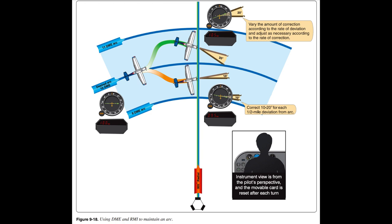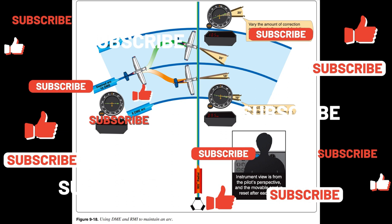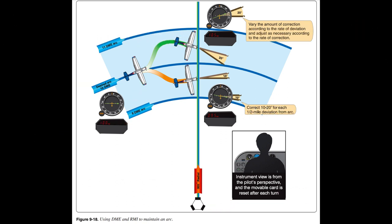To maintain the arc using an RMI: 1. With the RMI bearing pointer on the wingtip reference (90 or 270 degrees) and the aircraft at the desired DME range, maintain a constant heading and allow the bearing pointer to move 5–10 degrees behind the wingtip — this causes the range to increase slightly. 2. Turn toward the facility to place the bearing pointer 5–10 degrees ahead of the wingtip reference, then maintain heading until the bearing pointer is again behind the wingtip. Continue this procedure to maintain the approximate arc. 3. If a crosswind causes the aircraft to drift away from the facility, turn until the bearing pointer is ahead of the wingtip reference. If a crosswind causes drift toward the facility, turn until the bearing is behind the wingtip. 4. As a guide in making range corrections, change the RB 10–20 degrees for each half-mile deviation. For example, in no-wind conditions, if the aircraft is one-half to one mile outside the arc, turn 20 degrees toward the facility to return to the arc.